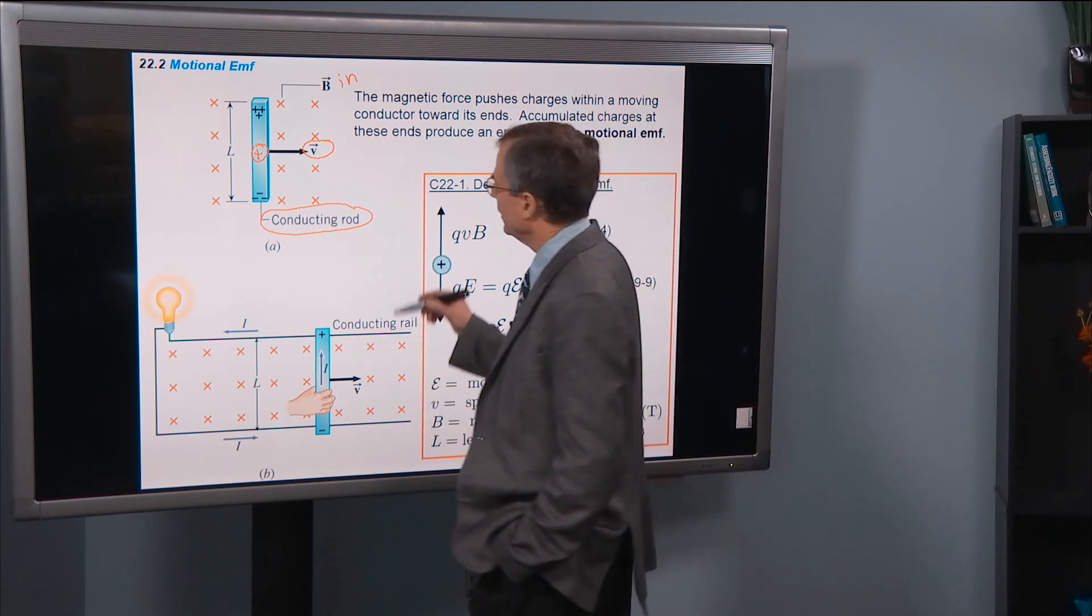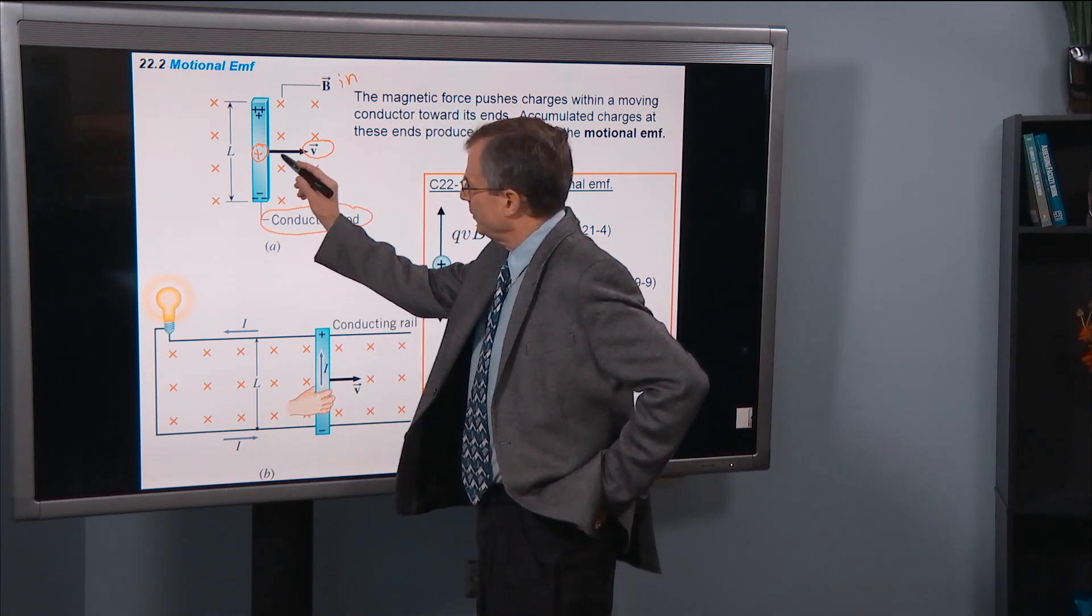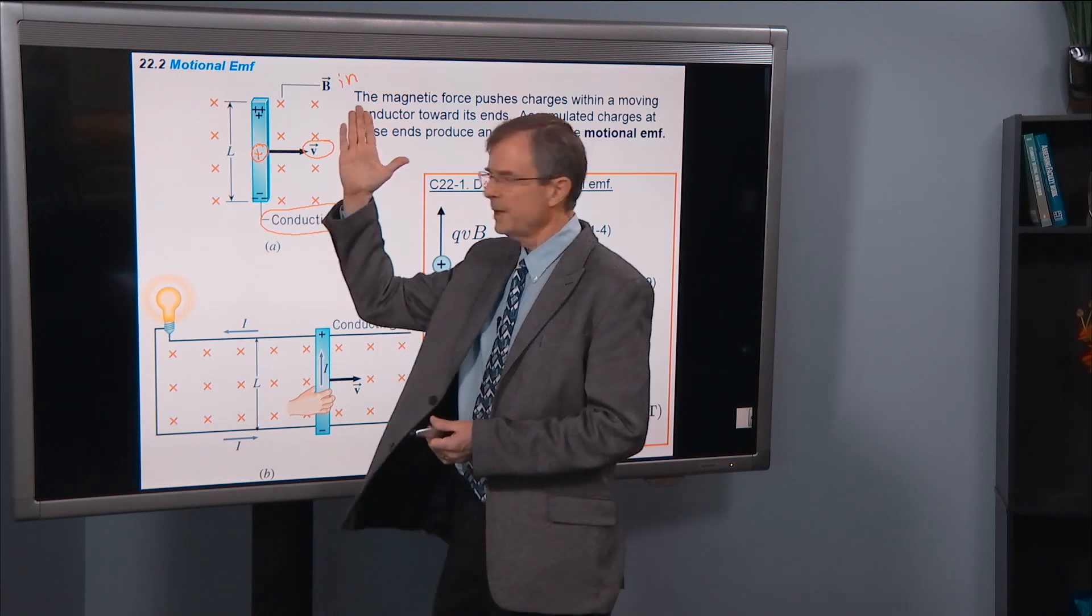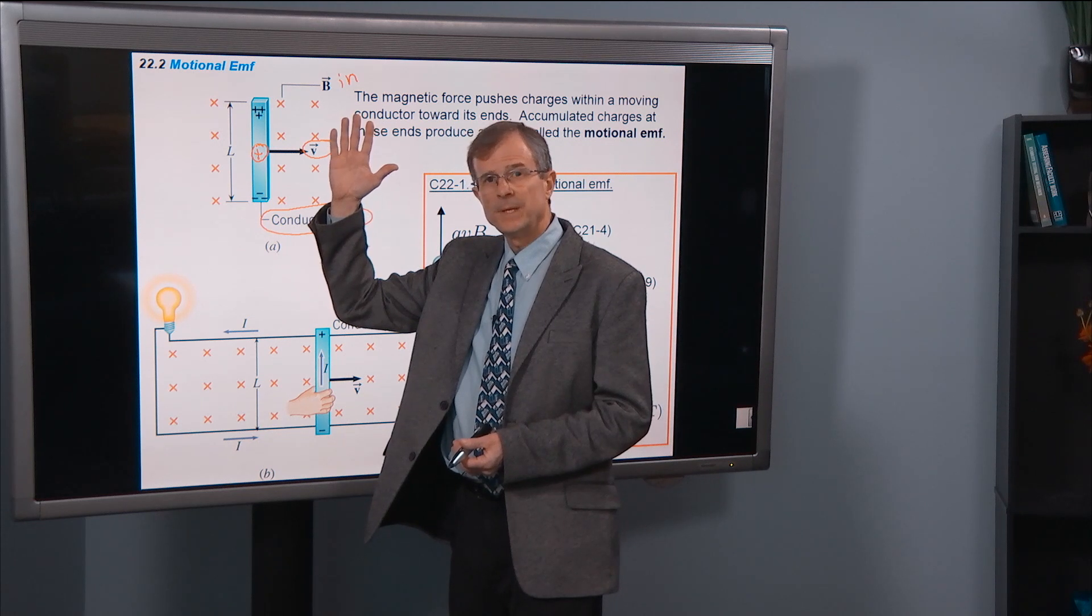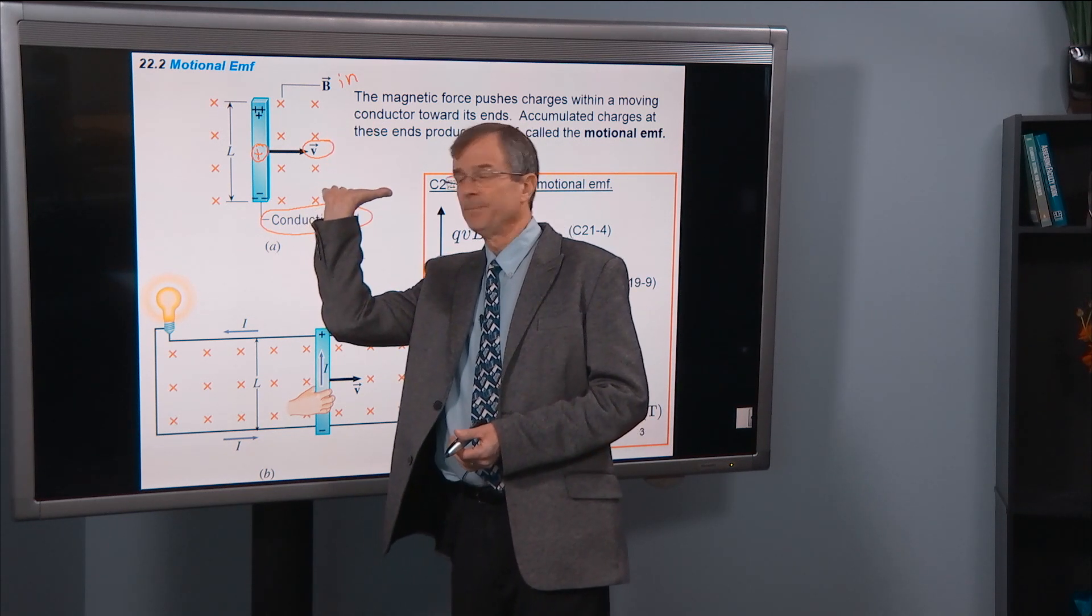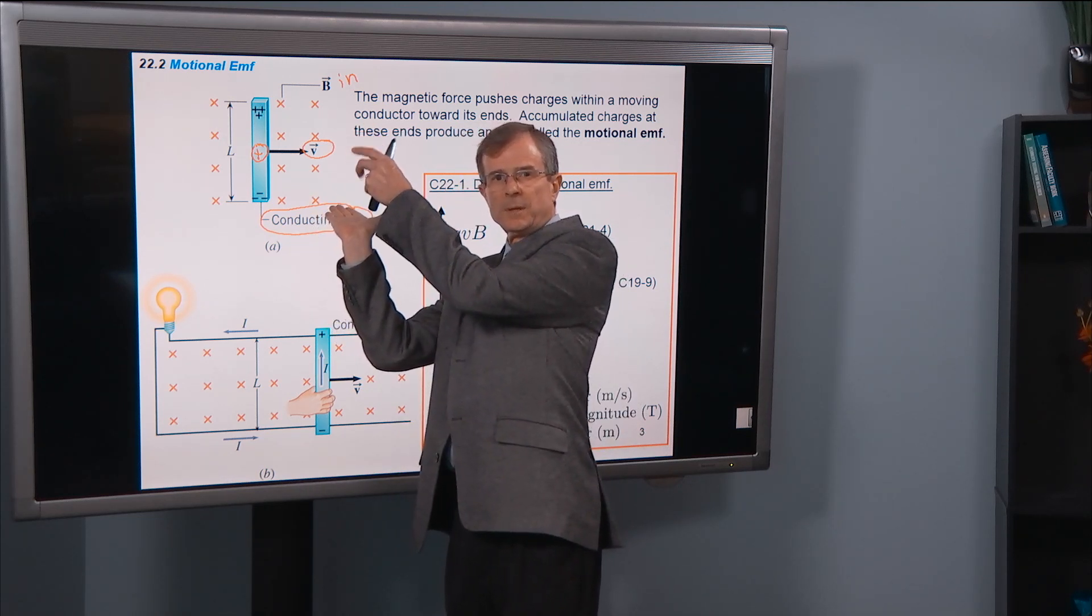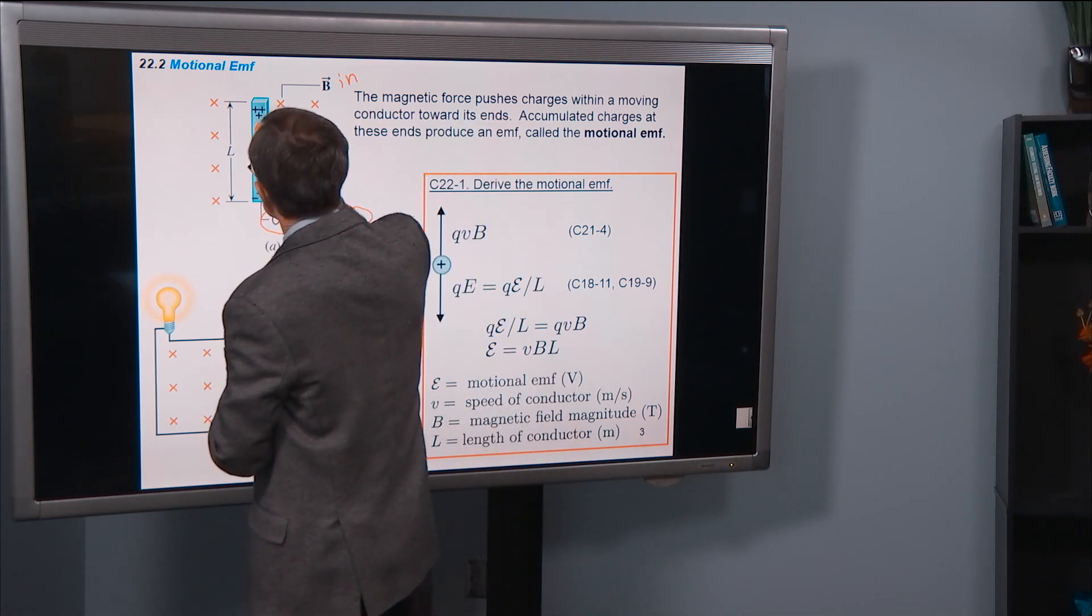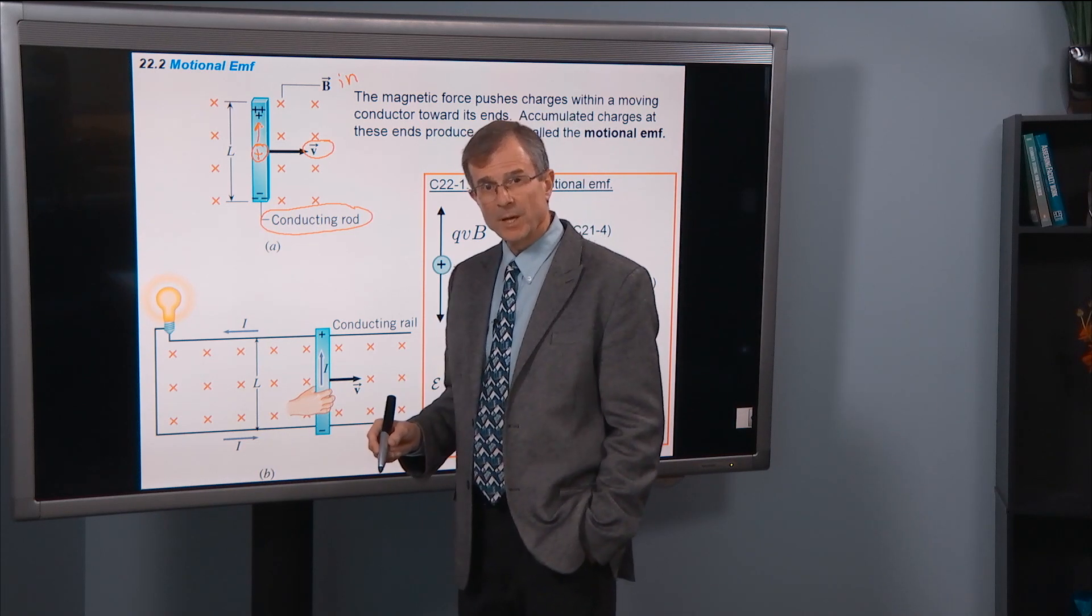But the magnetic force is, if you have this charge moving to the right with velocity v, then we can put our thumb in the direction of the velocity, and orient our fingers in the direction of the magnetic field, which is in. So we're going to have to go back like that. And the palm of the hand gives the direction of the force on that positive charge, which is in this direction. So that's the direction of that magnetic force on a positive charge.